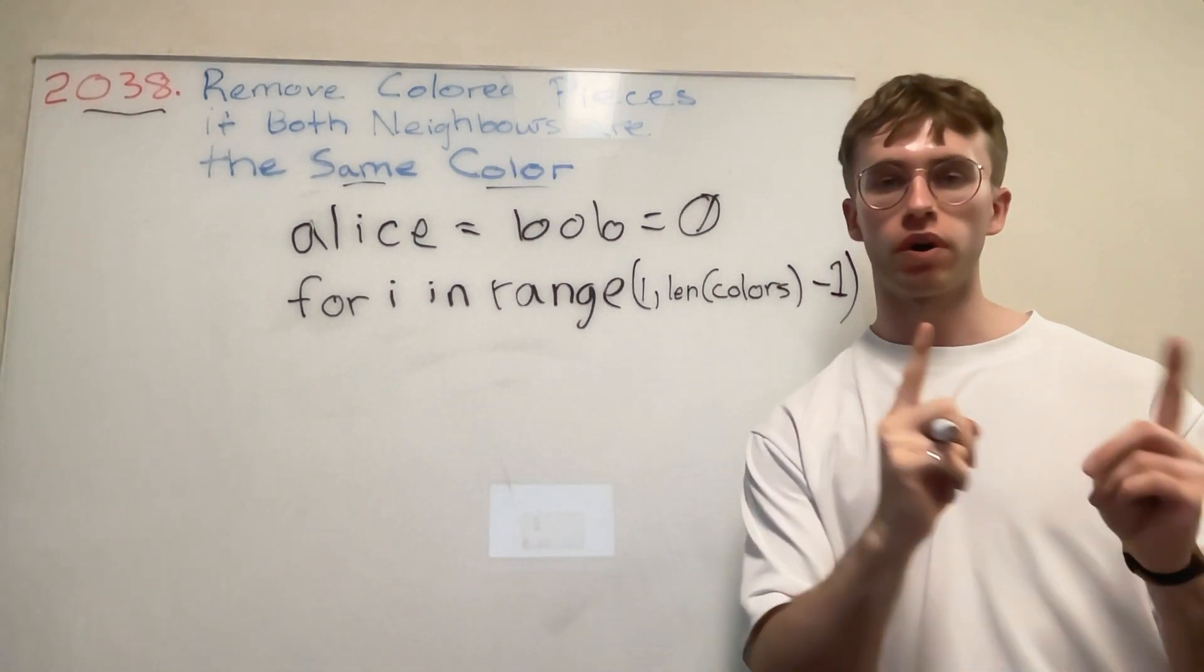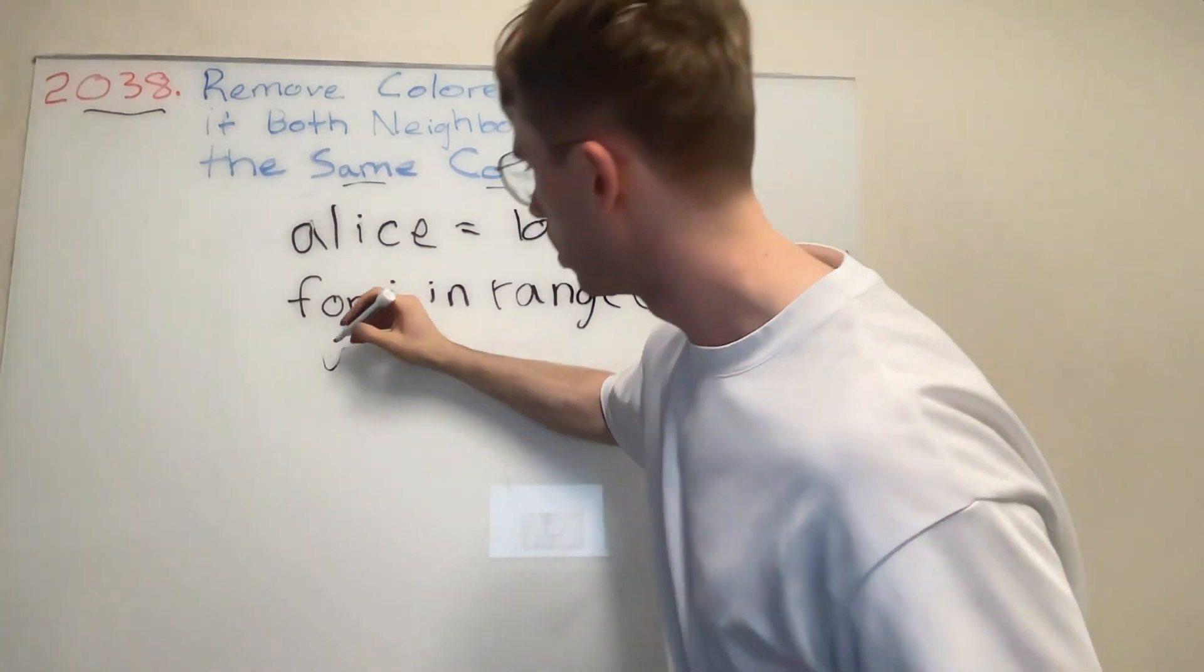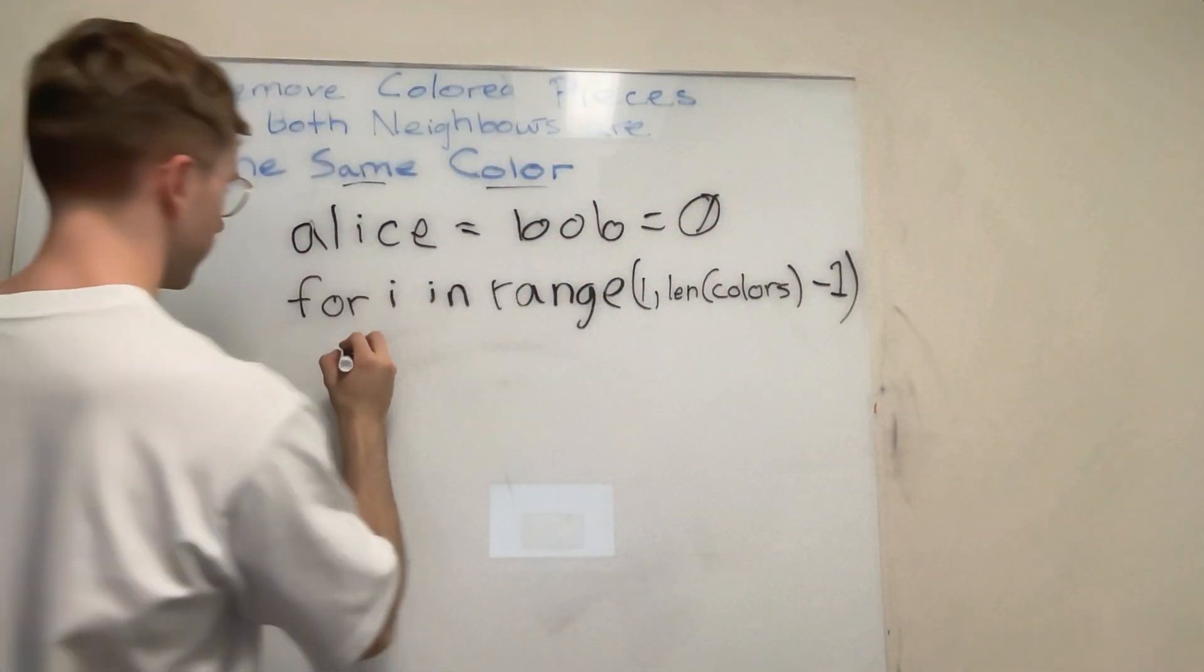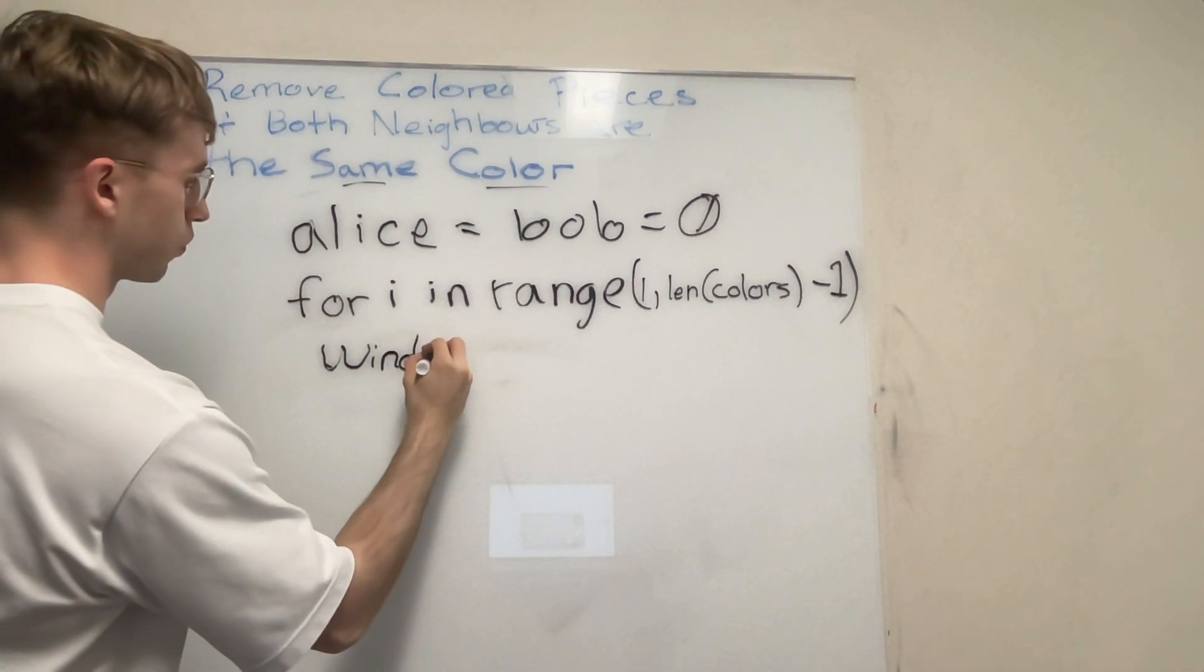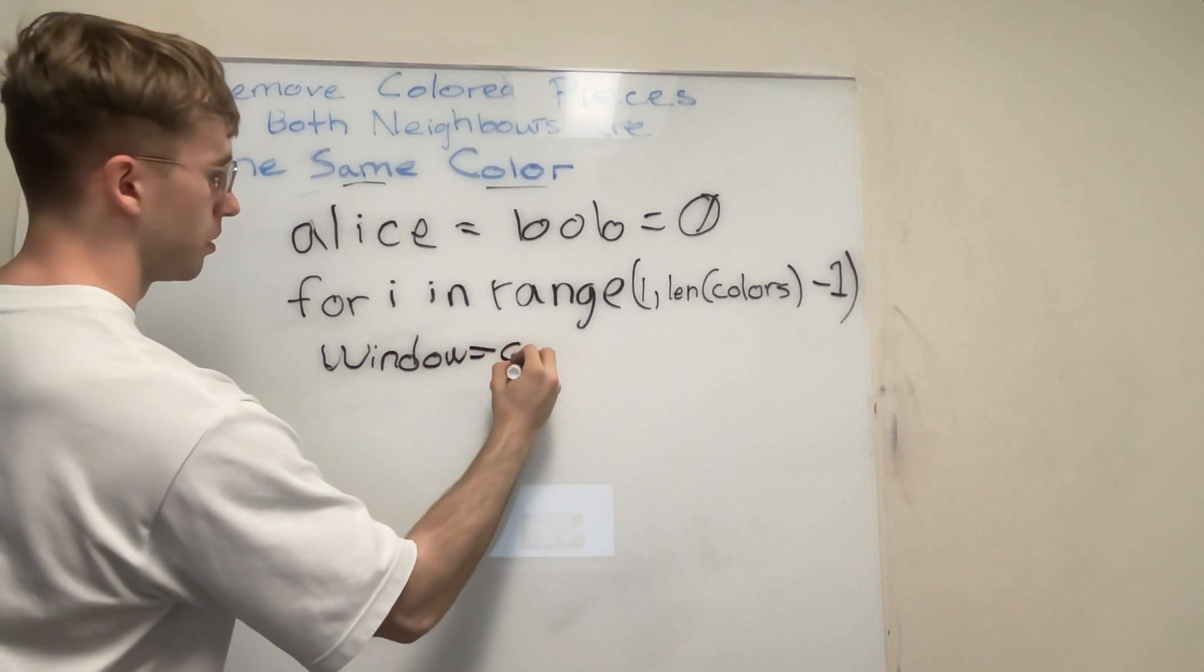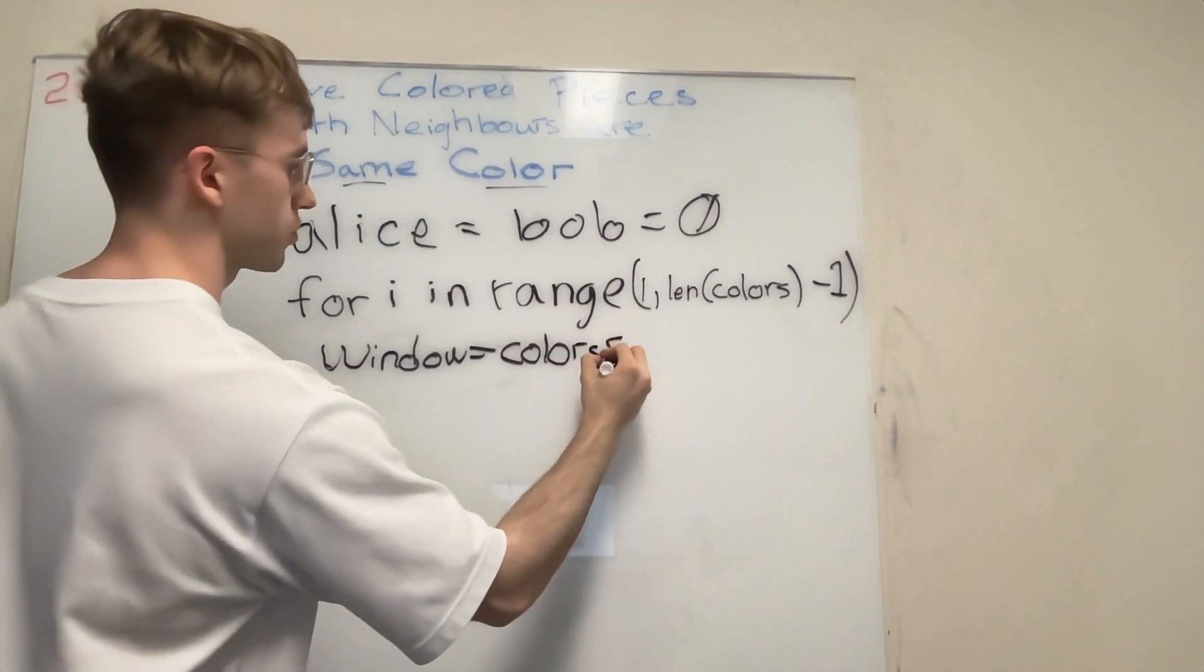From here, what we're going to want to do is slide that window along. So that window will be just essentially window equals basically our input array colors.